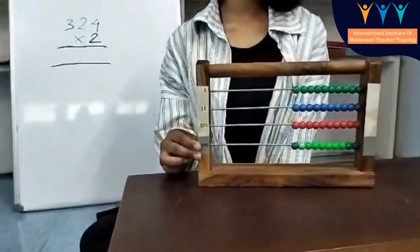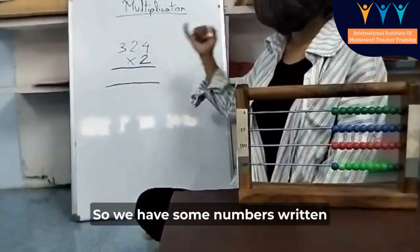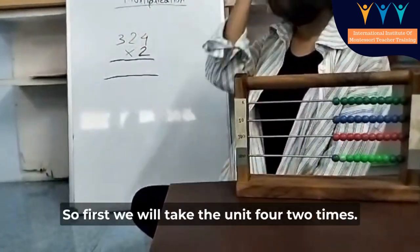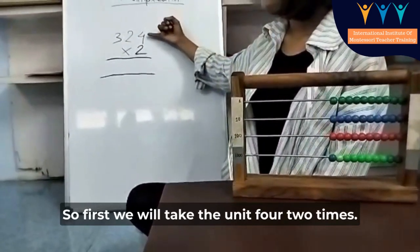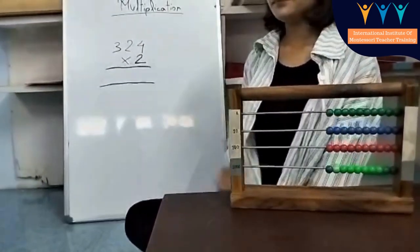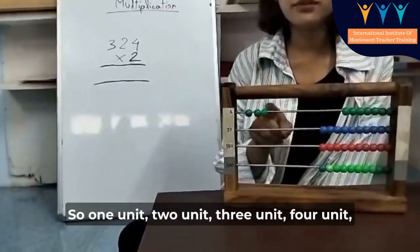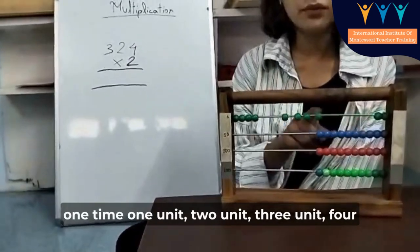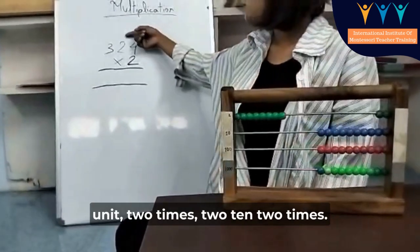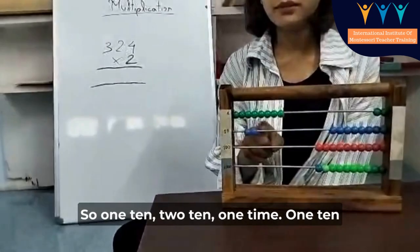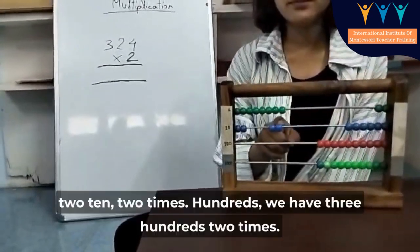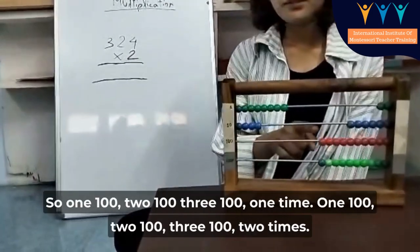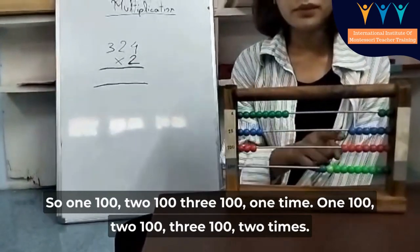We have the number 2324 multiplied by two. First, we take the units: four, two times — one unit, two unit, three unit, four unit (one time), then one unit, two unit, three unit, four unit (two times). Then the tens: two, two times — one ten, two tens (one time), then one ten, two tens (two times). Then hundreds: three hundred, two times — 100, 200, 300 (one time), then 100, 200, 300 (two times).